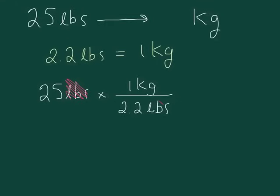We have pounds on the top, pounds on the bottom, so they cross off, and now we're simply left with 25 times 1 kilogram on the top and the number 2.2 on the bottom.